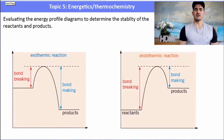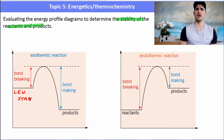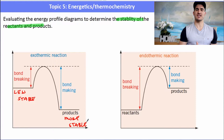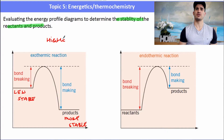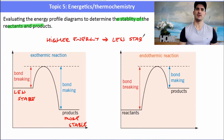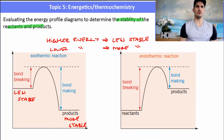On the enthalpy level diagram, we talk about bond strength and stability. In an exothermic reaction, reactants have more energy than the products. More energy means less stable; lower energy means more stable — think of a kid on cordial: lots of energy, less stable. So, the more energy you have, the less stable and weaker the bond. Lower energy means more stable and a stronger bond.